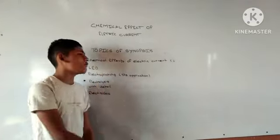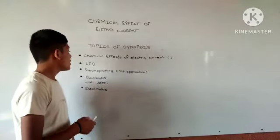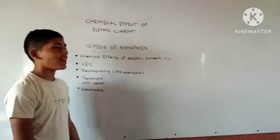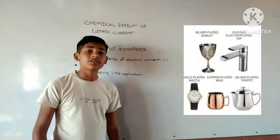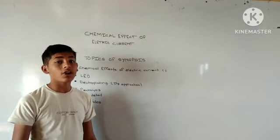Then we learn about electroplating. Formation of layer of metal to another metal is called as electroplating. And its application is increased the lustrous property of metal and ductility of that metal.